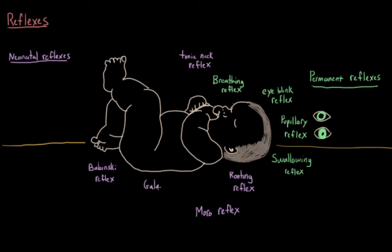We also have the gallant reflex, which describes how when the skin on one side of the baby's back is stroked, the baby will tend to move or swing to that side. And this also usually disappears around six months.